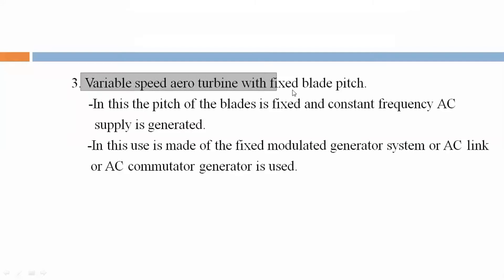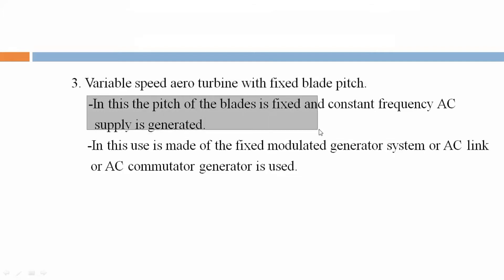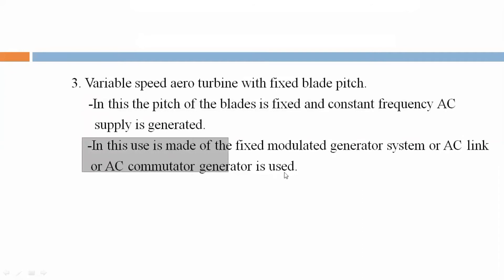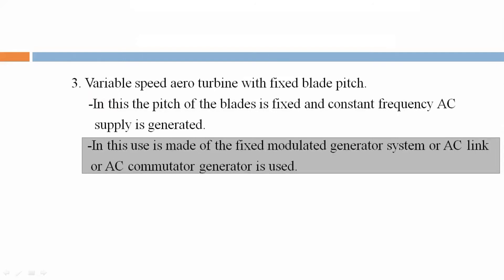Third: variable speed aeroturbine with fixed blade pitch. In this, the pitch of the blade is fixed and a constant frequency AC supply is generated. For this, use is made of a frequency modulated generator system, or AC link, or AC commutator generator.